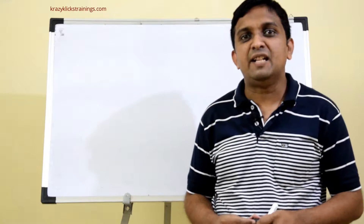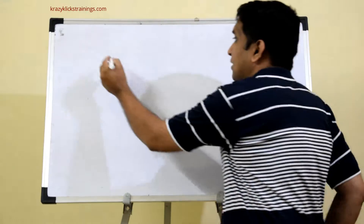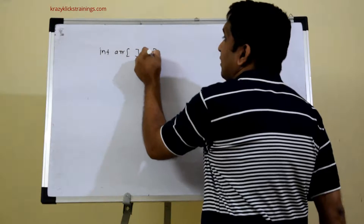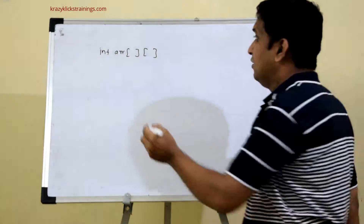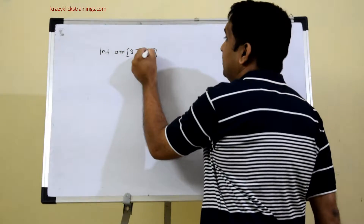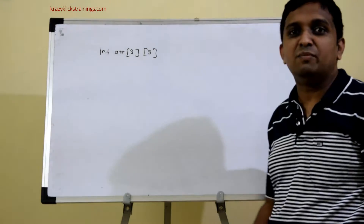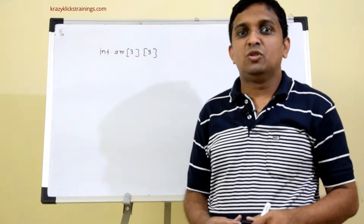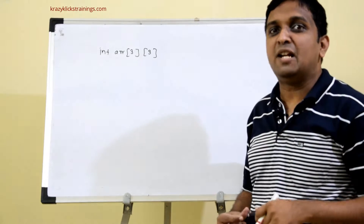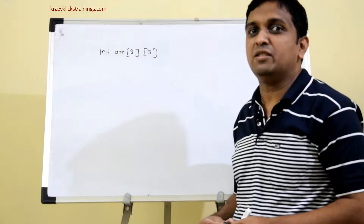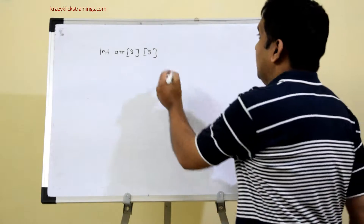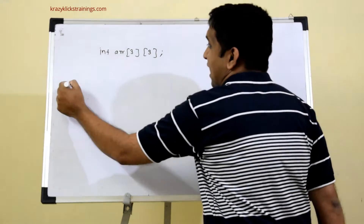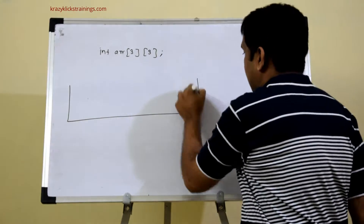If I want to declare a 2D array in C language, it is declared as int arr with two subscripts. In the first subscript I will mention the row size and in the second subscript I will mention the column size, because you can visualize a 2D array as a matrix. Though it is a matrix, the memory allocation will be continuous. For this declaration it will allocate 36 bytes of memory since there are 9 integers, and it will be continuous memory.